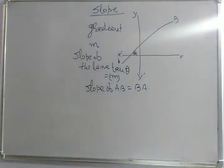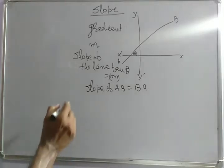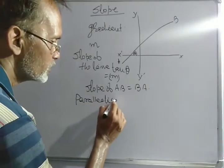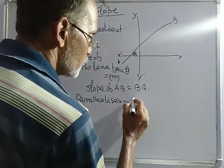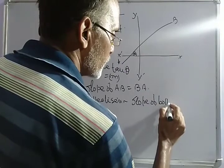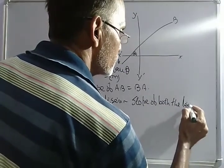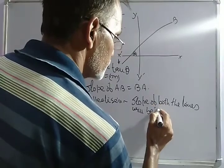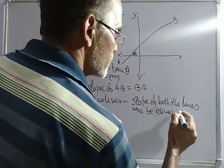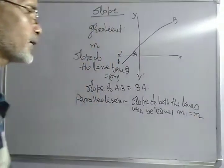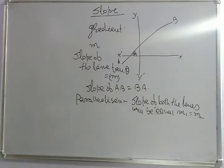Now the condition of parallelism can also be defined by the method of slope. For parallelism: the slopes of both lines will be equal. That means if the slope of the first line is m1 and the slope of the second line is m2, then both lines will be parallel if and only if m1 is equal to m2.